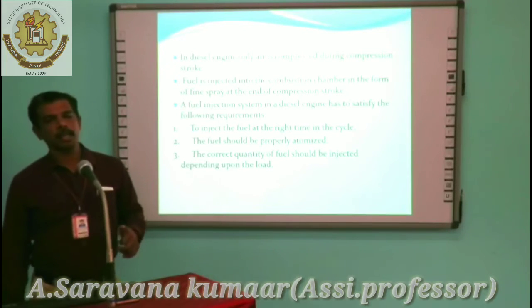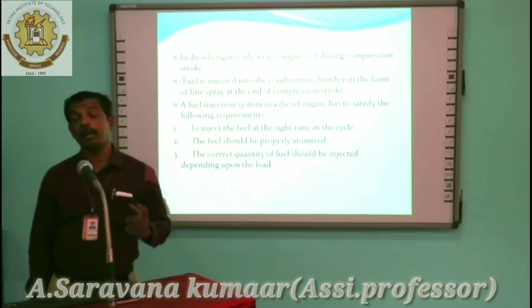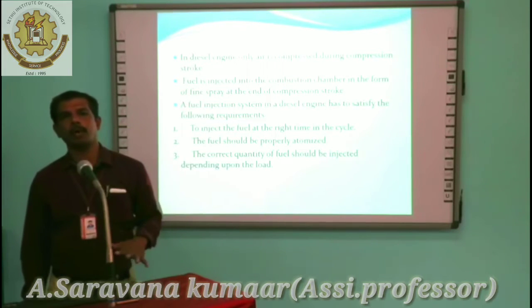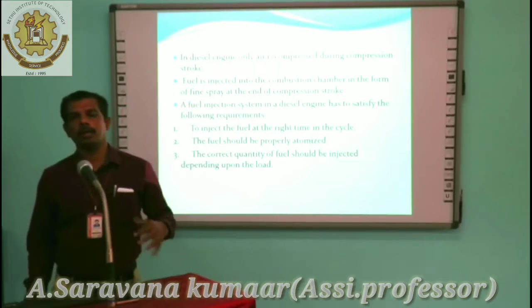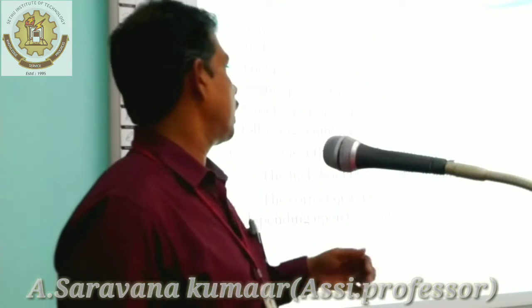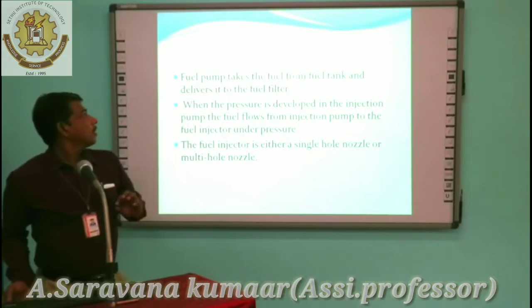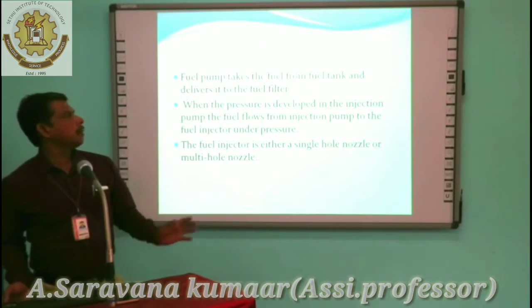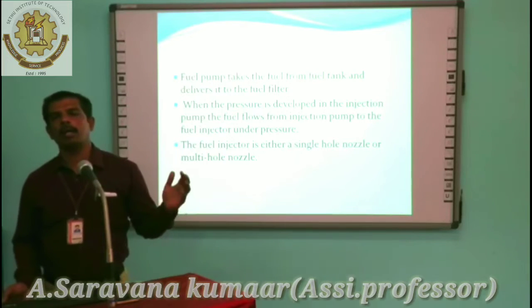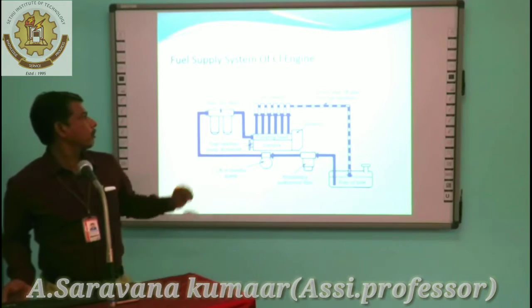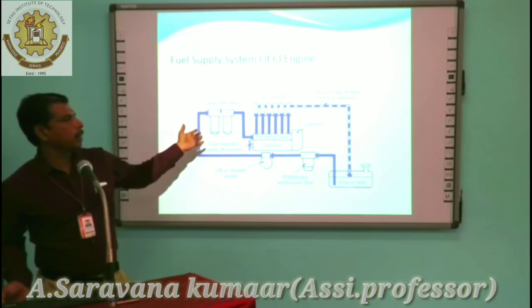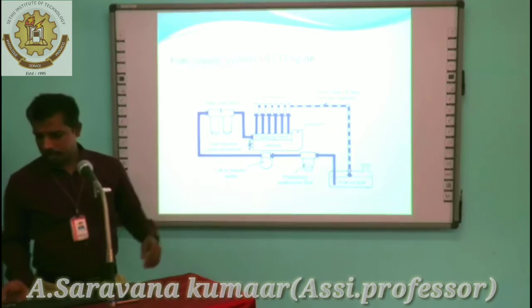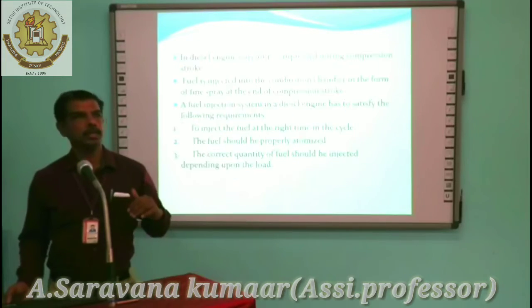The injector supplies fuel at the right time in the cycle — when the compression end happens, the fuel is injected at the right time and burns during the power stroke. The fuel is burned and the stroke continues. The fuel should be properly atomized, and that work is handled by the injector. The fuel pump takes fuel from the fuel tank and delivers it to the fuel filter. In summary, the total system goes: fuel tank, primary filter, pump, primary and secondary filter, fuel injection pump, nozzle.